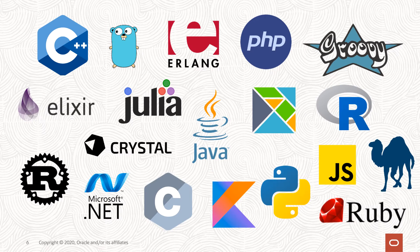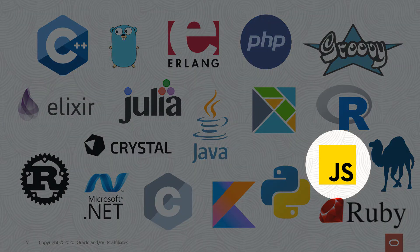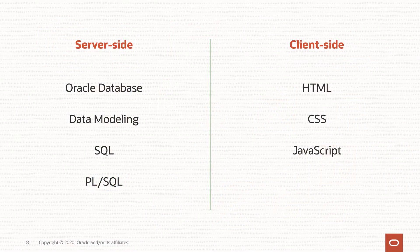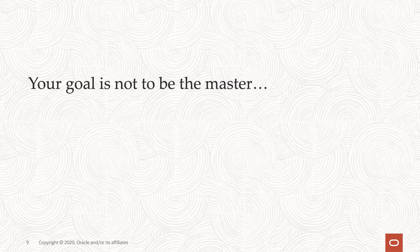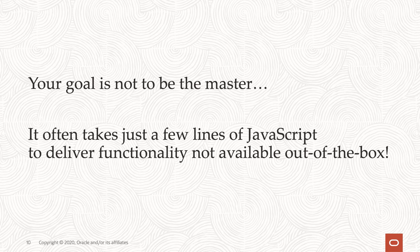If you wanted to learn a new programming language today, you'd have no shortage of options to choose from. There are old languages and new languages, even languages with cute little animals for their logos. But only one of these languages is going to help you fill in the picture when it comes to client-side development in a web browser, and that's JavaScript. Before you get to JavaScript, it's best to know at least a little bit about HTML and CSS, though I won't cover either of those topics in this workshop. Your goal here is not to become some kind of JavaScript master, because it often takes just a few lines of JavaScript code to deliver functionality not available out of the box with Apex — and that is the reason most Apex developers would want to learn JavaScript.